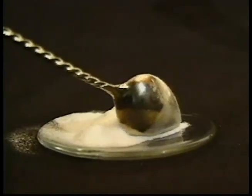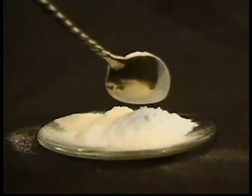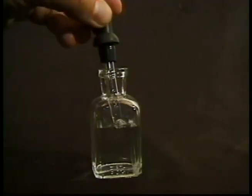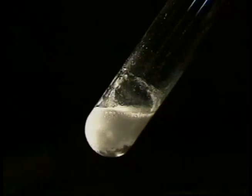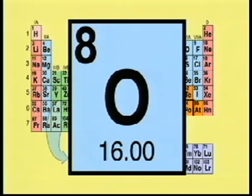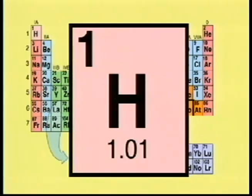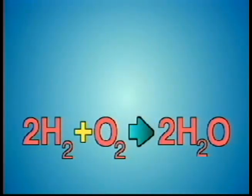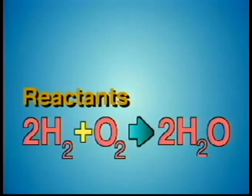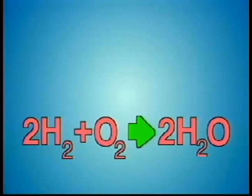It is possible to describe a chemical reaction in words. For example, we saw how sodium bicarbonate and acetic acid chemically react to form carbon dioxide gas, sodium acetate, and water. Scientists have developed a simpler way to present a chemical reaction. Using the chemical symbols for compounds, a reaction can be expressed by a chemical equation. A chemical equation is an expression using chemical symbols to represent a chemical reaction. In a chemical equation, the plus sign is used to show that substances combine. Between the reactants and products, an arrow signifies that reactants yield or result in the following products.